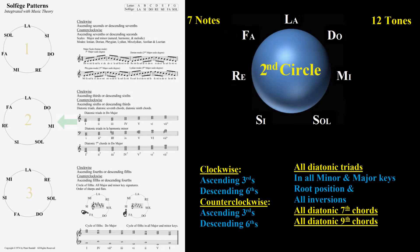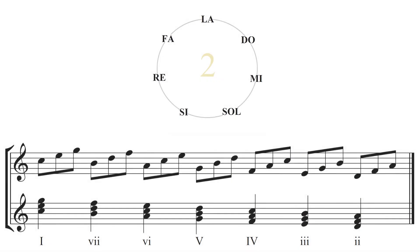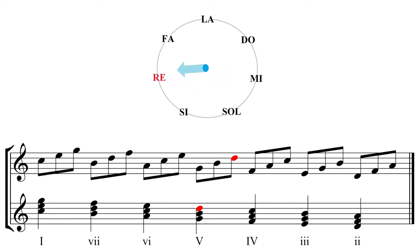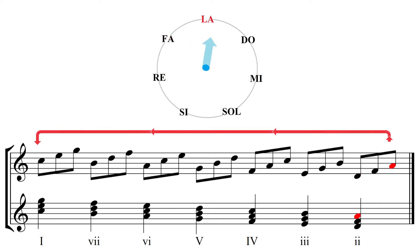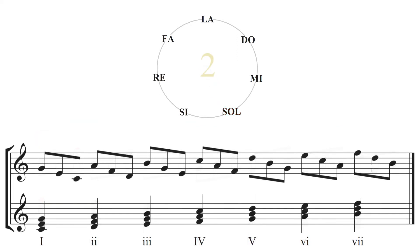The second circle contains all possible triads, seventh chords, ninth chords, and beyond. Sing diatonic triads, starting on the root from the bottom note, Do. Do, Mi, Sol, Si, Re, Fa, La, Do, Mi, Sol, Si, Re, Fa, La, Do, Mi, Sol.